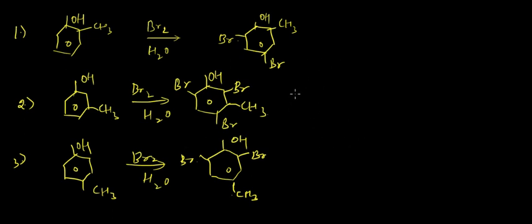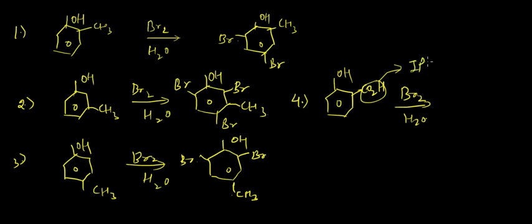Let's discuss this compound with a CO2H group here. Br2 and H2O again - ipso substitution will take place as this group would be leaving. We would be getting OH here with Br at all the ortho and para positions.